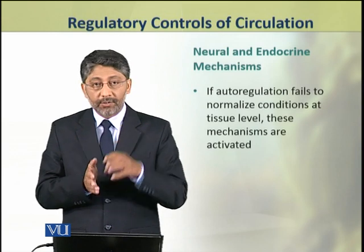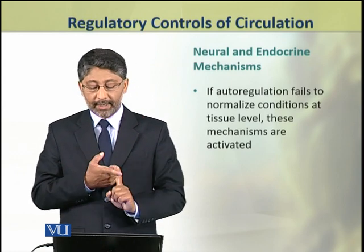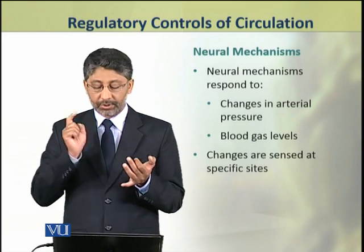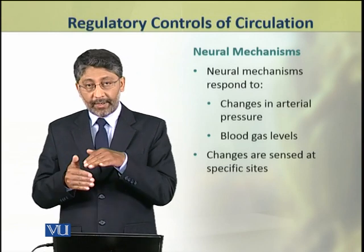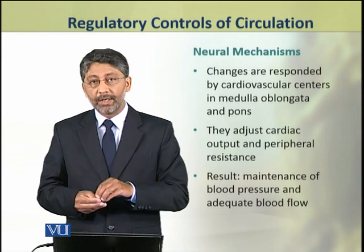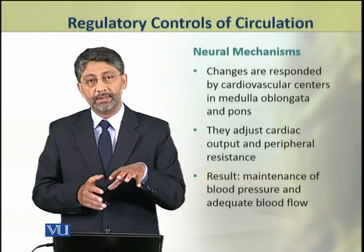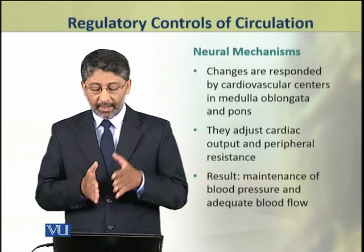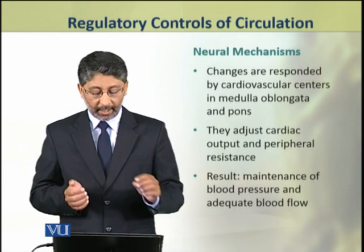If tissue blood supply cannot be controlled by autoregulation in the capillary network, then neural and endocrine mechanisms are activated. Neural mechanisms respond to changes in arterial pressure and blood gas levels, which are sensed at specific sites in the circulatory system. These changes are responded to by the cardiovascular centers located in the medulla oblongata and pons of the brain. These cardiovascular centers adjust the cardiac output and peripheral resistance, resulting in the maintenance of blood pressure and adequate blood flow.